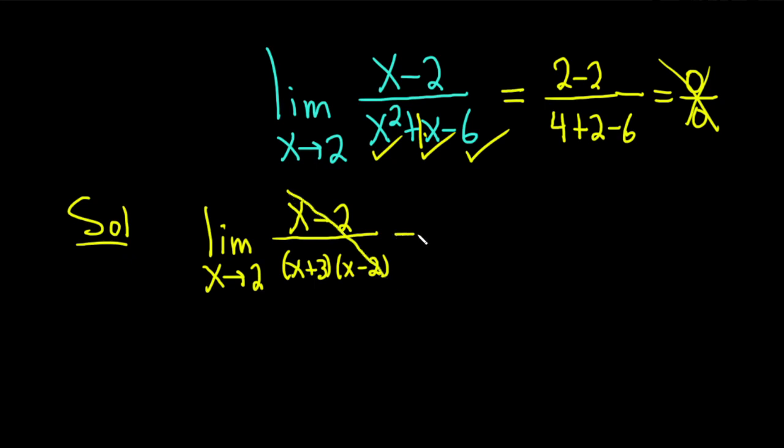And look at this. It goes away. This is equal to the limit as x approaches 2. And here we have 1 over x plus 3.